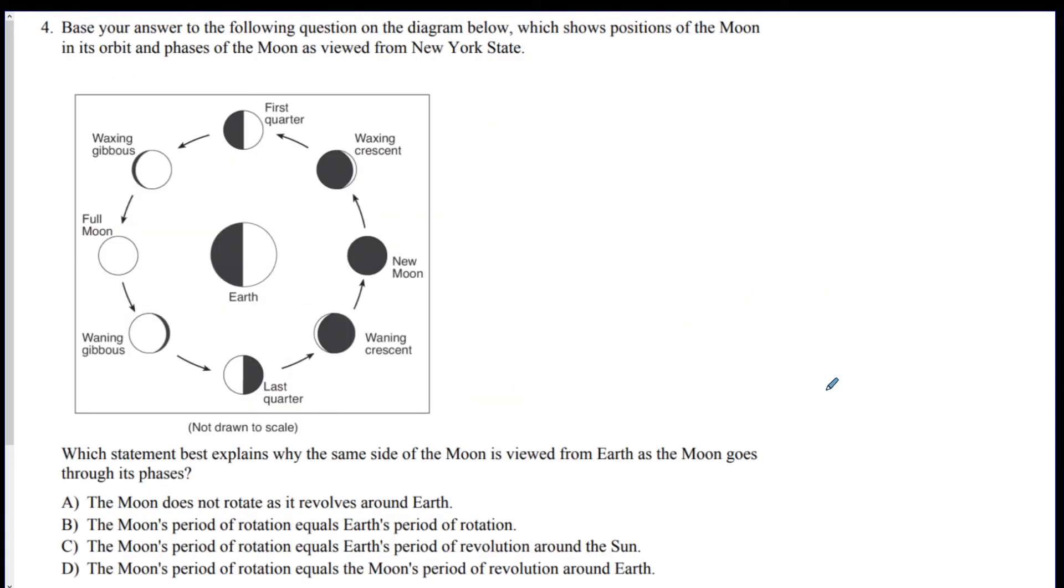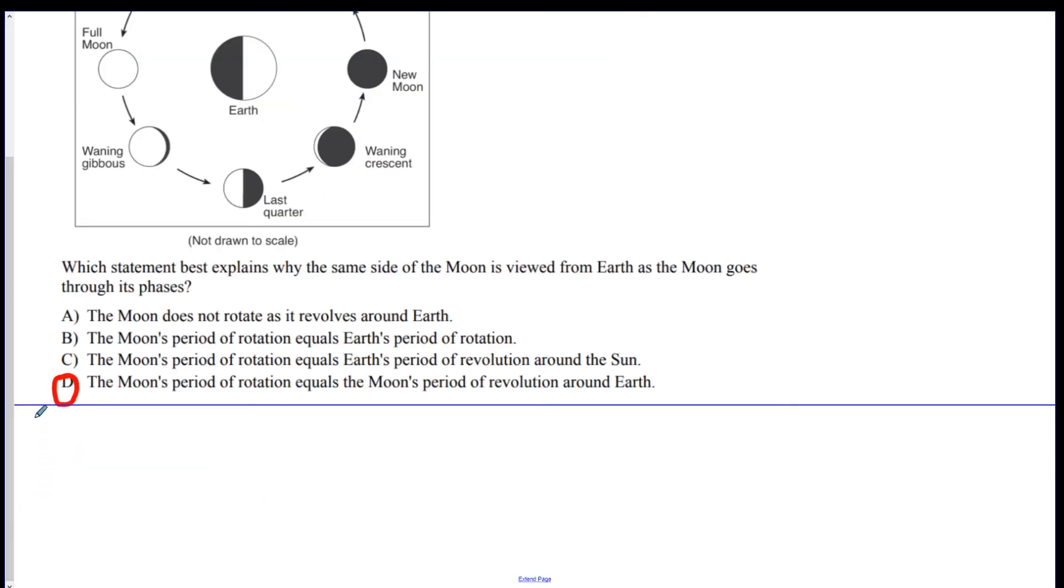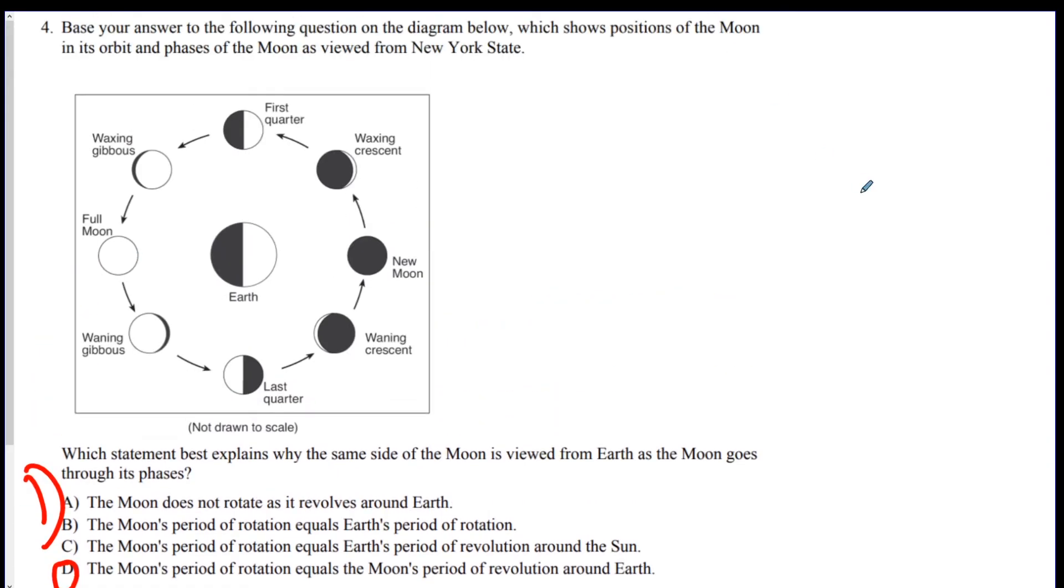Number four, which statement best explains why the same side of the Moon is viewed as the Moon goes through its phases? The answer is the Moon's rotation equals the Moon's period of revolution around the Earth, D. It's got that equal period of rotation and revolution. I just want to give you a little test taking strategy. If you see a picture like this on the test, guess what? This shows all the phases of the Moon. And they're all correct. So if you're struggling on the phase of the Moon, flip through your test booklet and see if there's a diagram like this. Because that will help you answer a lot of other questions.